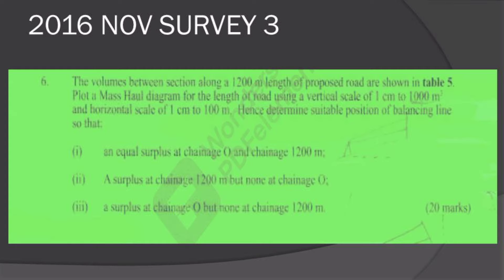Here we will look at a question paper under Diploma 3, 2016 November, for building civil engineering and architecture learners. The question goes as follows: Question number six. The volumes between section along a 1200 meter length of a proposed road are shown in table five. Plot a mass haul diagram for the length of road using a vertical scale of 1 centimeter to 1000 meters cubed and horizontal scale of 1 centimeter to 100 meters.